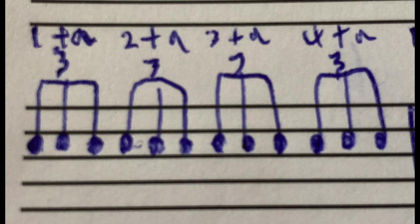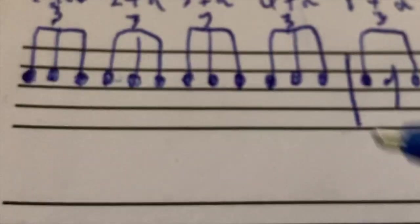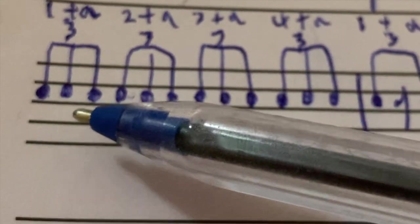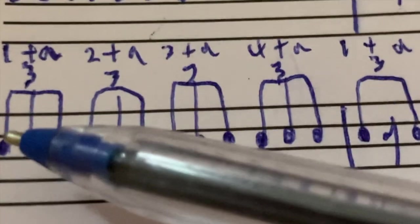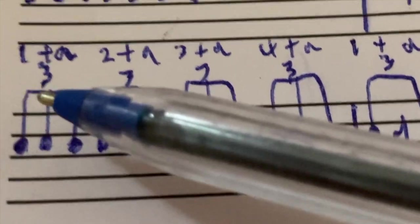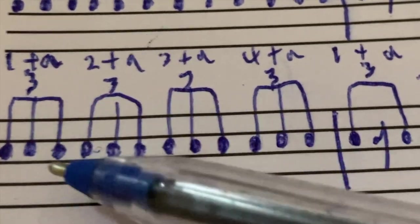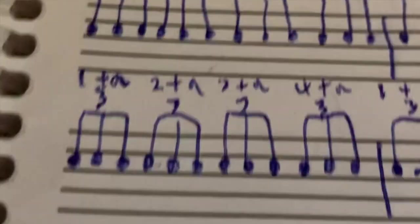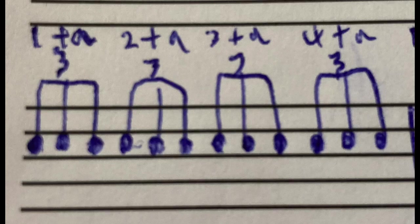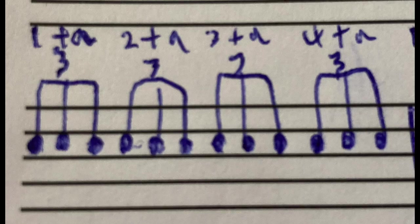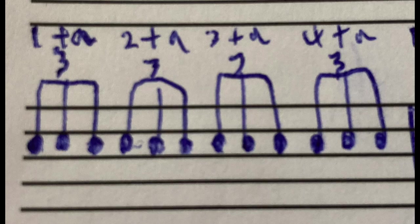Alright, next we got the triplet - this is specifically the eighth note triplet. What happens here is we use that same one line to connect that we do with the eighth notes, but we have to fit three triplets in the space of two eighth notes, which is the same as fitting three notes in the space of one quarter note. Now triplets will always be marked by this three written above them every single time. They'll always have that three written above them. And they will be counted like: 1 and a, 2 and a, 3 and a, 4 and a.